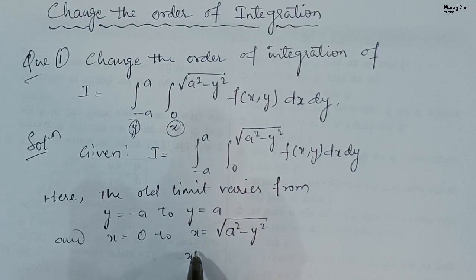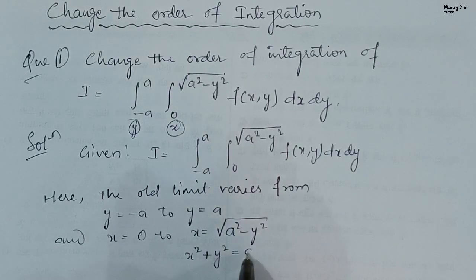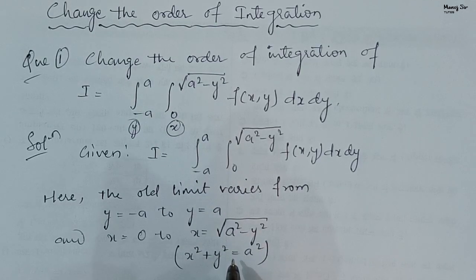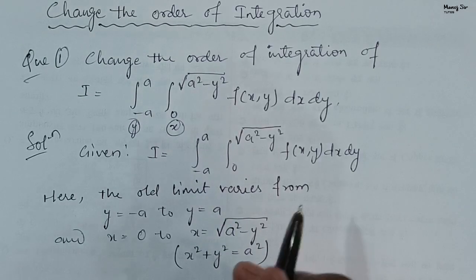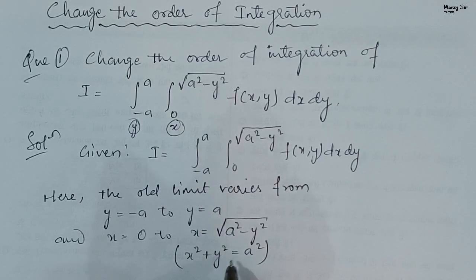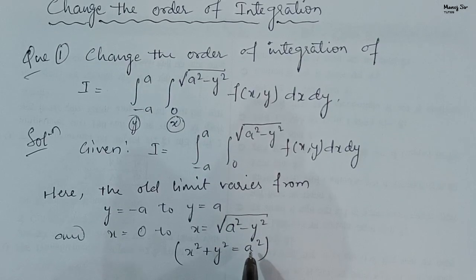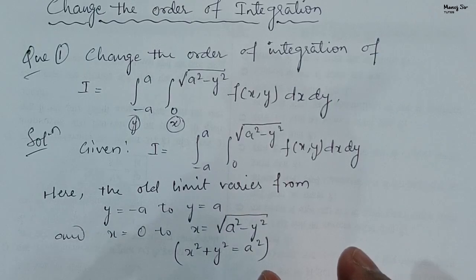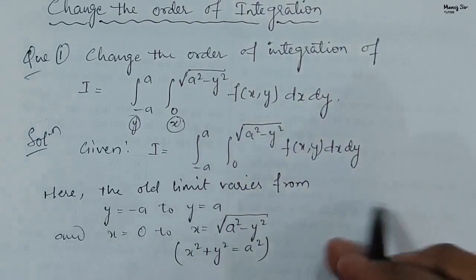Looking at the upper limit for x, we find this is x squared plus y squared equals a squared — the equation of a circle whose radius is a and center is at the origin.